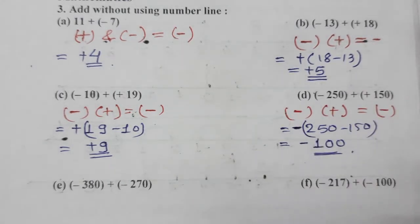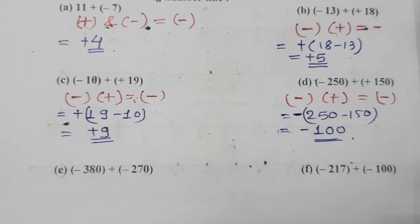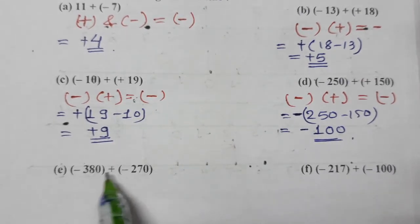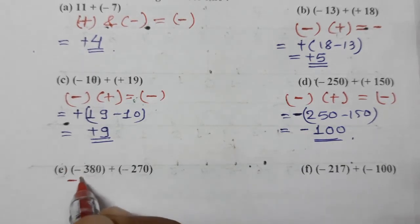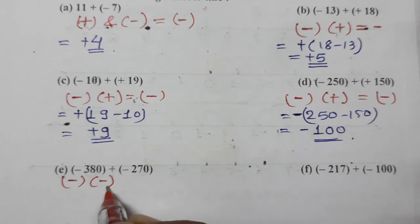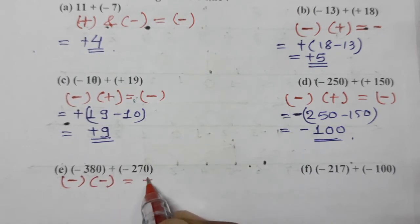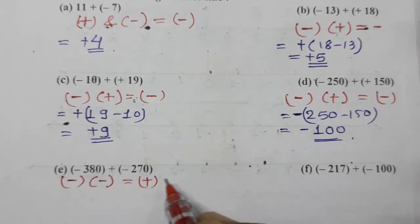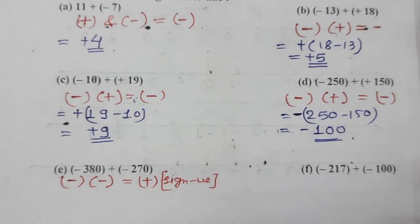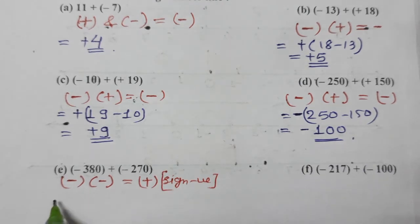Now comes (e). Minus 380, minus 270. Minus minus plus. If both minus come, that means we have to add them. Minus minus plus, and sign is negative.